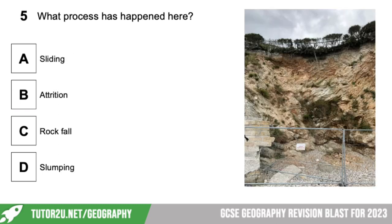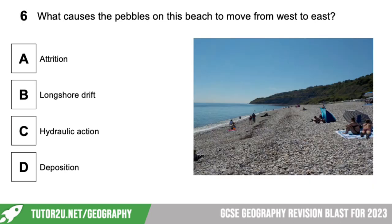Number five: what process has happened here? Is it sliding, attrition, rock fall, or slumping? It is rock fall — you can see some great big bits of rock at the bottom of that photograph, just behind the barriers. Question six: what causes the pebbles on this beach to move from west to east? Is it attrition, longshore drift, hydraulic action, or deposition? It is longshore drift. Hopefully you remember the idea of the zigzag motion — the swash coming up the beach at generally a 45-degree angle and the backwash returning at a 90-degree angle.